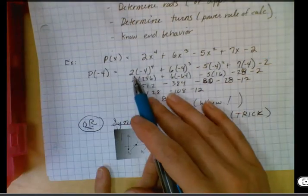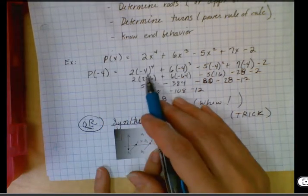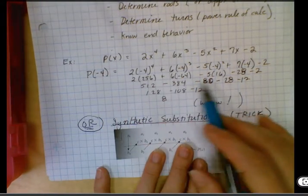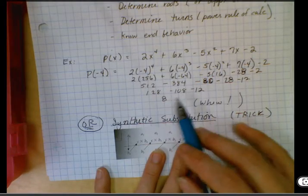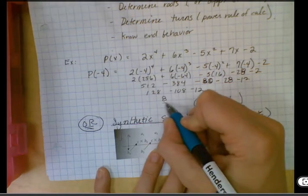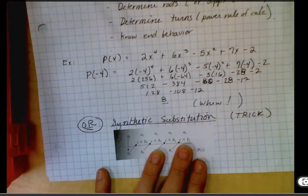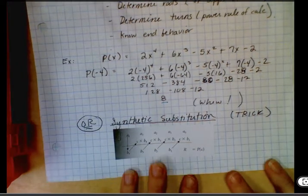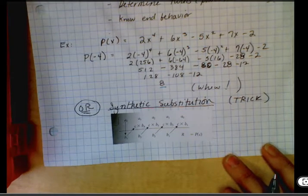So here's an example of where we just plug and chug. We're going to plug in negative four, and we're going to compute, and compute, and compute, and we finally get eight. Okay, so that's a lot of work. Or I'm going to teach you guys this cool little trick here, which is called synthetic substitution.